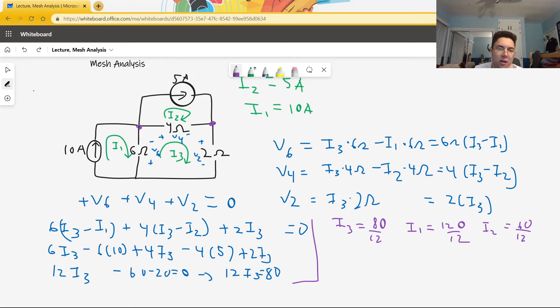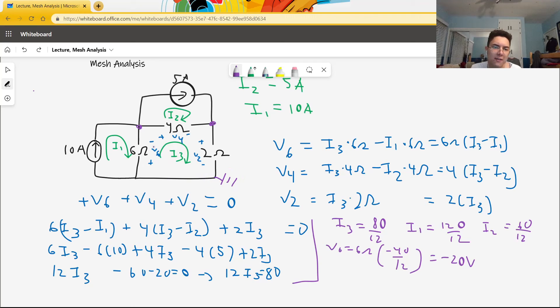Let's determine what the voltages are at each of these points if the ground is here to confirm that we've done this correctly. Confirmation is an important part of doing a circuit well. V6 is, of course, equal to 6 ohms times (I3 minus I1). 80 minus 120 is negative 40 over 12. The 6 and the 12 cancel out to be over 2, so we get negative 20 volts for V6. How do we interpret this? If this is 0 volts and V6 were positive 20, that would mean that the positive terminal is 20 volts higher than the negative terminal, so this would be negative 20. But because it's actually negative 20 volts for V6, the negative terminal is higher than the positive terminal. It's a rise. So this must be 20 volts.